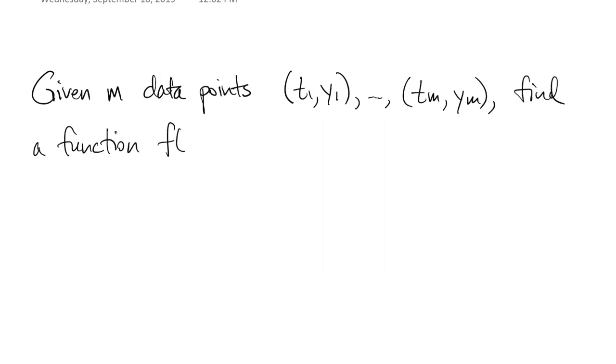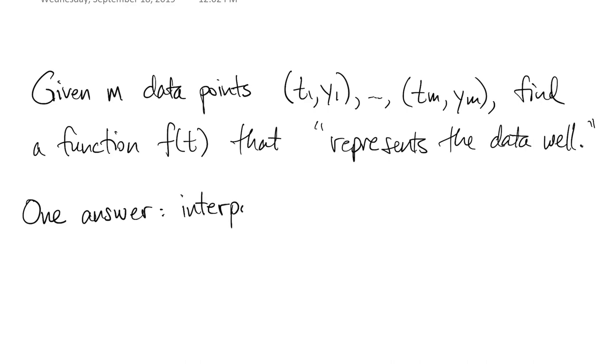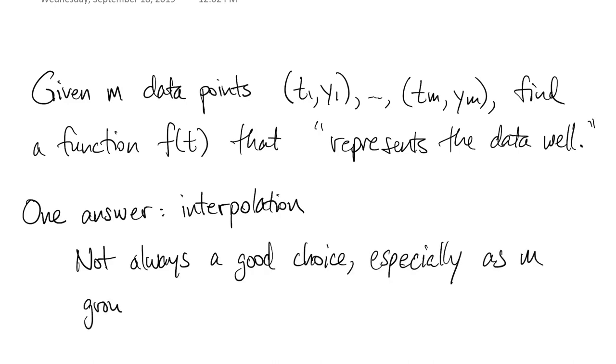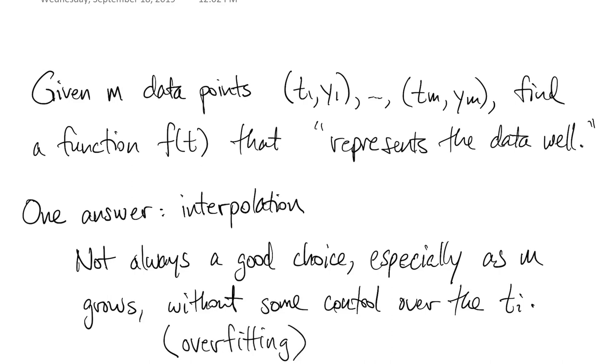Let's revisit a situation from the last chapter. We're given some data points and we want to find a function that represents them somehow. The answer in the last chapter was to use interpolation. There we said the function has to go through every data point. For some fairly complicated reasons, that's not always a good choice. That's especially true as the number of points grows, unless you're able to really control where those t values are. In machine learning, sometimes this is called overfitting.